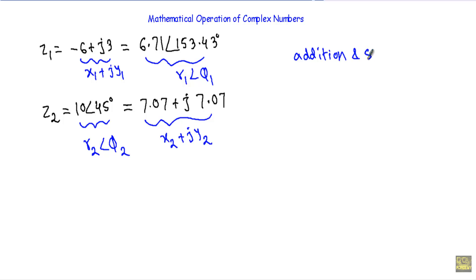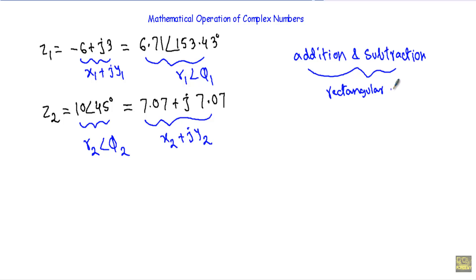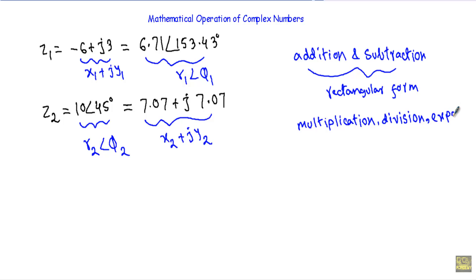When we perform addition and subtraction of complex numbers, we will use the Cartesian or rectangular form. When we perform multiplication, division, and exponents, we will use polar form. So for addition and subtraction we use rectangular form, and for multiplication, division, and exponents we use polar form.